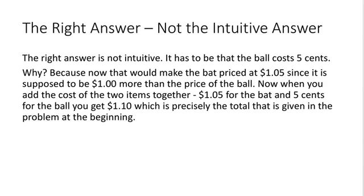The right answer is really not the intuitive answer. It has to be that the ball costs $0.05. Because now that would make the bat priced at $1.05, since it's supposed to be $1 more than the price of the ball. When you add the cost of the two items together — $1.05 for the bat and $0.05 for the ball — you get $1.10, which is precisely the total given in the problem.